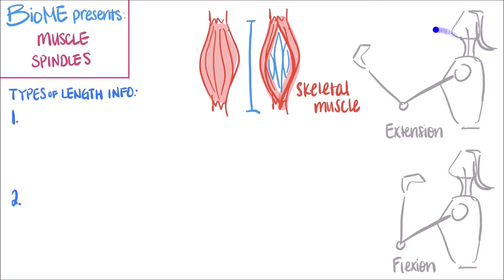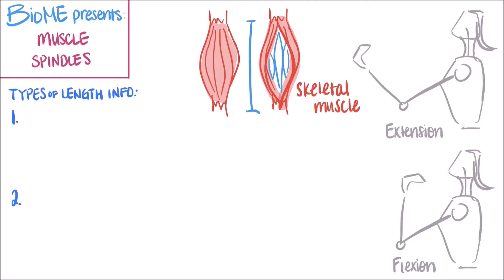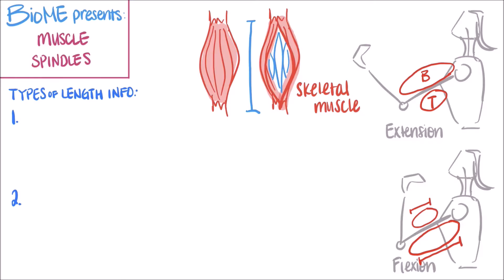Here I've drawn an example of a movement that we should all be familiar with, which is the extension and flexion of your forearm. From previous classes, you may know that there are two main muscles involved in this movement: the bicep on the top and the triceps on the bottom. Together, they are an antagonistic muscle pair. During extension, the bicep is relaxed and lengthened while the triceps is contracted and shortened. In contrast, when you flex your forearm, the bicep is contracted while the triceps is relaxed. So you can see how your brain can use muscle length information sent by the muscle spindles within your bicep and triceps to tell whether your forearm is extended or flexed without you having to actually look.